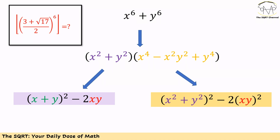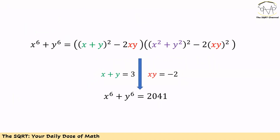For the first term we can simplify further: x squared plus y squared equals (x plus y) squared minus 2 times xy. As for the second term, we can write it as (x squared plus y squared) to the power of 2 minus 2(xy) to the power of 2. Now let's put everything together. We can write x to the power of 6 plus y to the power of 6 based on just x plus y and x times y, and if we replace the values we will get the result.